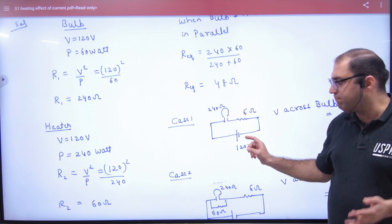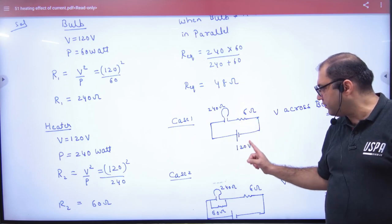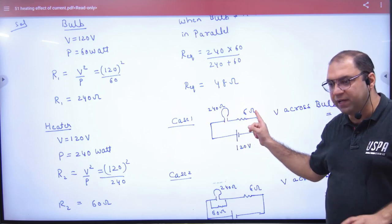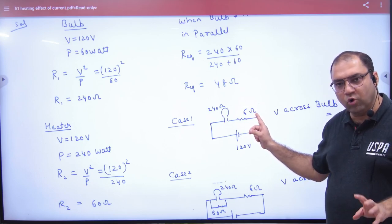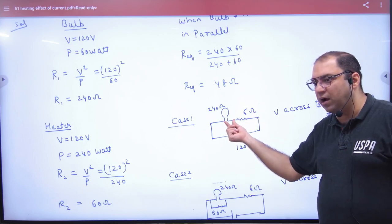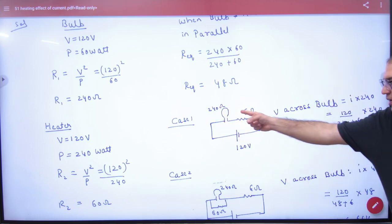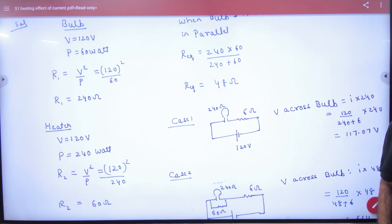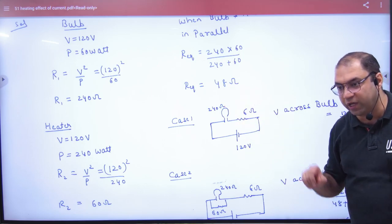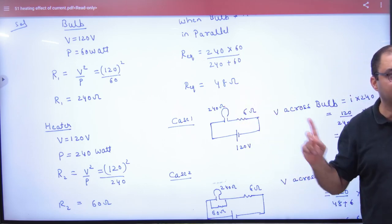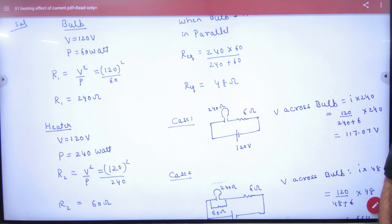So how much will it be? First, let us find the current. 120 divided by 240 plus 6. Using Ohm's law, V equals IR. So I into 240 gives how many volts the bulb got before. Don't think that the bulb got 120 volts. It will not get 120 volts because the wire resistance is connected, so some voltage drops there.